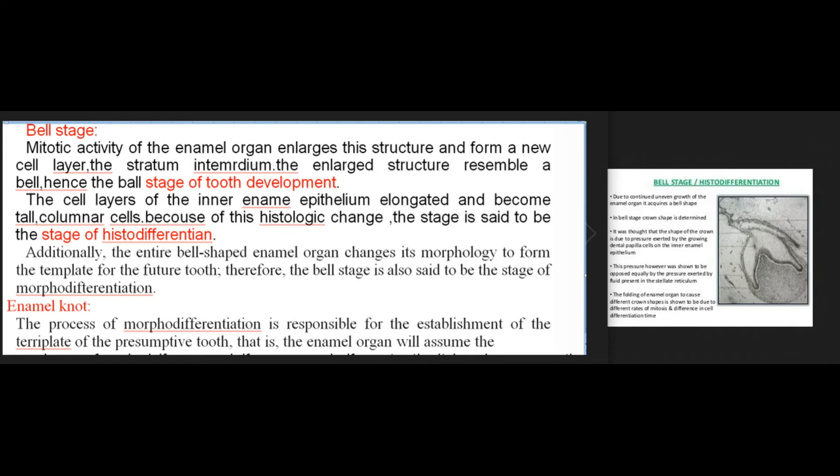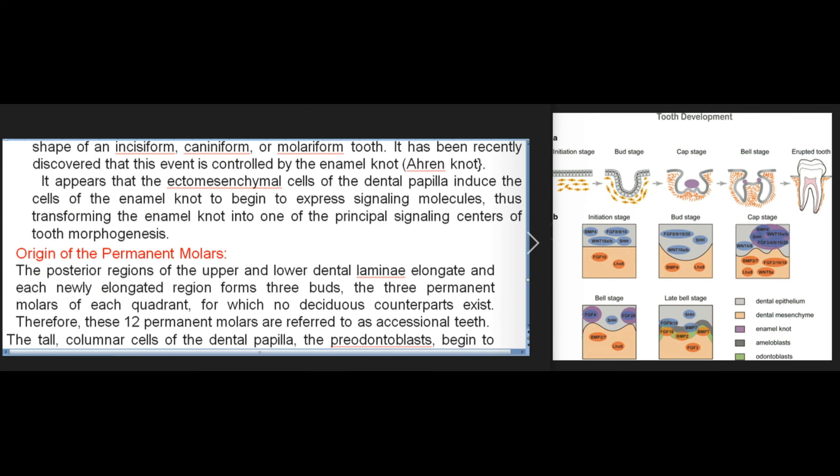The process of morphodifferentiation is responsible for the establishment of the tooth plate of the presumptive tooth; that is, the enamel organ will assume the shape of an incisiform, caniniform, or molariform tooth. It has been recently discovered that this event is controlled by the enamel knot. It appears that the ectomesenchymal cells of the dental papilla induce the cells of the enamel knot to begin to express signaling molecules, thus transforming the enamel knot into one of the principal signaling centers of tooth morphogenesis.